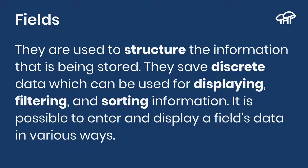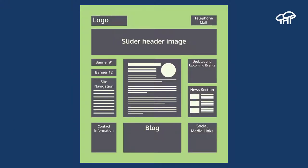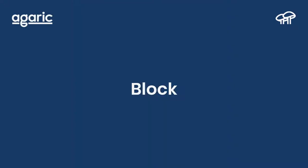Fields are used to structure the information that you store on your website. They can save specific types of data that you can use for displaying, filtering, and sorting. When you work with fields, it is possible to enter and display the information in many different ways. Going back to a page: so far we have talked about nodes, content types, and fields. On a regular page, for the most part the center area about 80% of the time will be a node. That node will be of one specific content type, and that node will contain several fields — for example, the title, image, tagline, description, and so on. So far, we have talked about the center of a page.